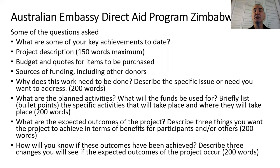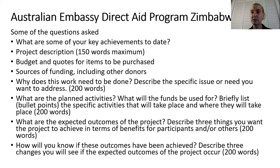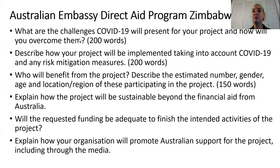Some of the questions the Australian Direct Aid Program will ask are: What are your key achievements to date? A short description of the project you want to carry out, the budget you want to request, and quotes for items you want to purchase. What are other sources of funding from other donors you might also be using? A problem statement explaining why this work needs to be done. What are the planned activities and expected outcomes? How will you know if you've achieved those outcomes — evaluation. What challenges does COVID-19 present for your project, and how can you work around them? Who will benefit? How will the project be sustainable after funding ends? And they'd like you to do some promotion for Australia having provided funding.